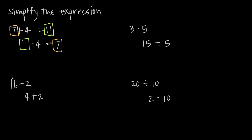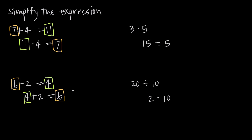We can do another example where we start with subtraction. We're going to start with 6 and subtract 2. 6 minus 2 we know is 4. Now if we start with 4 and we add the 2 back in, we're going to get back to 6 — the original number we started with. So we started with 6, subtracted 2, ended up with 4, then added 2 back and returned to 6.